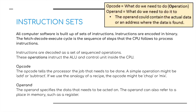Finally, we're going to talk about instruction sets — how this works. All computer software is built up of a set of instructions, a bit like a recipe. Instructions are encoded in binary. The fetch, decode, execute cycle is a sequence of steps that the CPU follows to process these instructions. Instructions are decoded as a set of sequenced operations; these operations instruct the ALU and the control unit inside the CPU. There are two different types: the opcode and the operand.